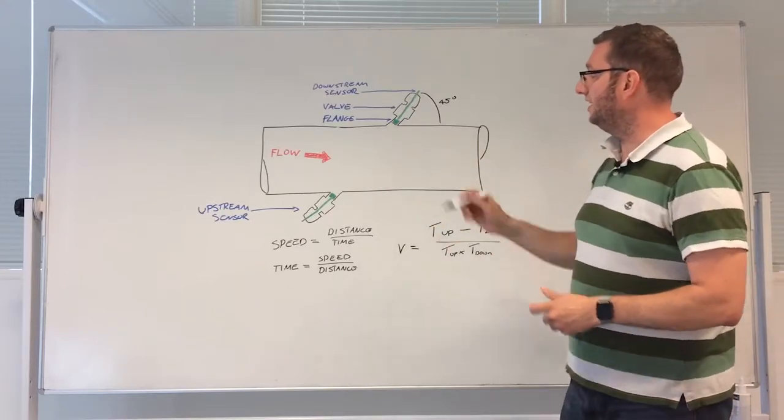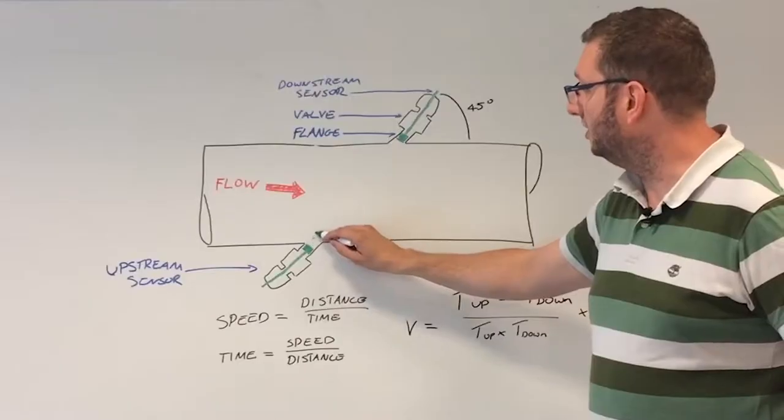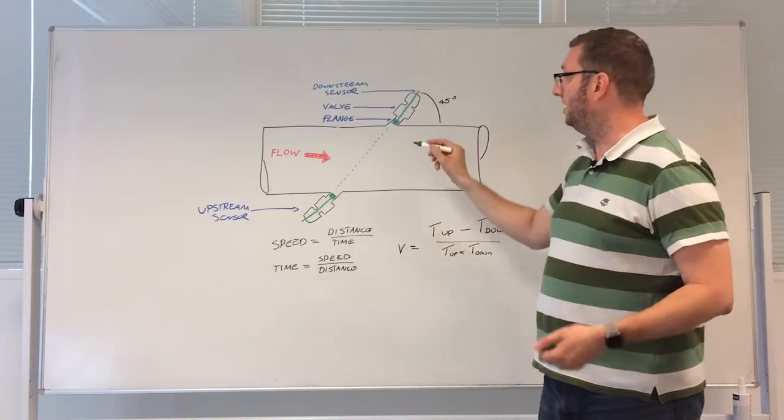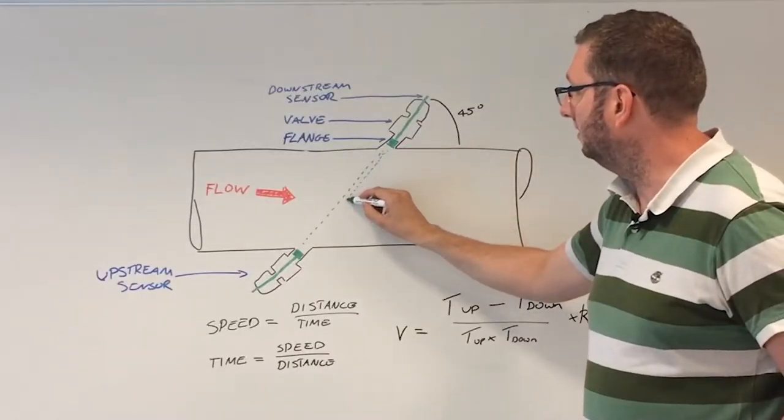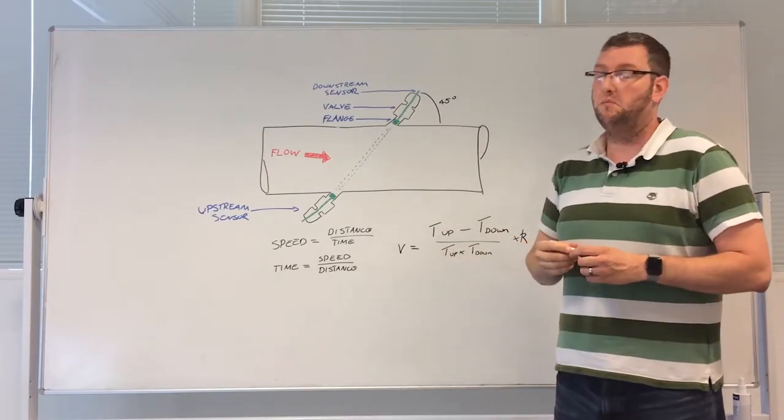Now what these ultrasonic sensors do? They act as both a transmitter and a receiver. So this one here is sending a signal across the pipe to the other one which receives it, and the downstream sensor sends an ultrasonic signal back to the upstream transducer.